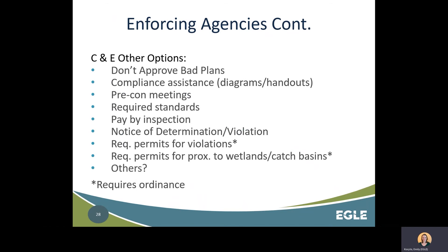Listed here are some other options for compliance and enforcement by enforcing agencies — not in the manual but good things for agencies to think about when implementing their program. Approving good SCSC plans makes it much easier for agencies to enforce them. Agencies can supply permittees with handouts, checklists, and diagrams to help with plan development and permit applications. Pay-by-inspection is when an agency has a difficult site that constantly needs inspection — anything outside of the four standard inspections can be charged. Another option is to charge the landowner for any technical reviews made for permitting the site.